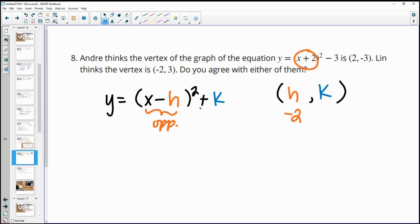And then this is going to be the k value that's sitting out there, OK? So when we look at this, we added negative 3. So the k value is negative 3. So our vertex is actually the point (-2, -3), which neither Lynn nor Andre had. So I don't agree with either of them because the vertex is this, which neither one of them said.